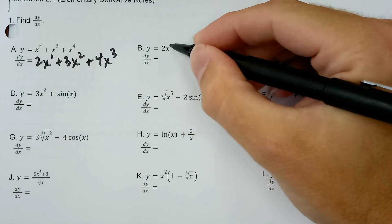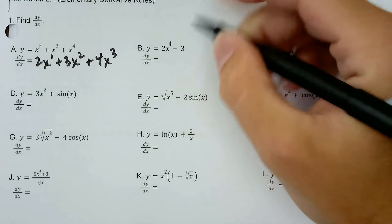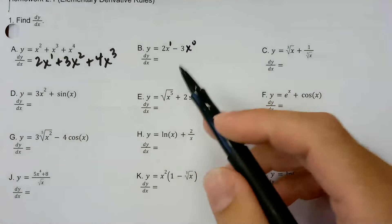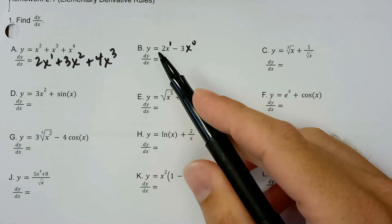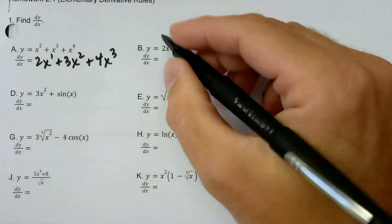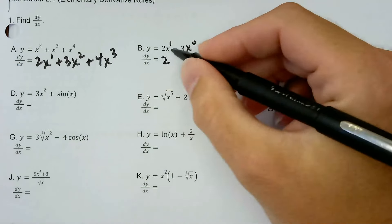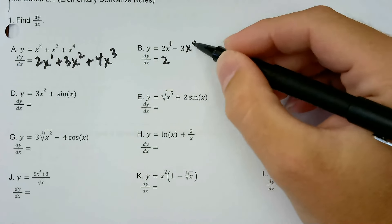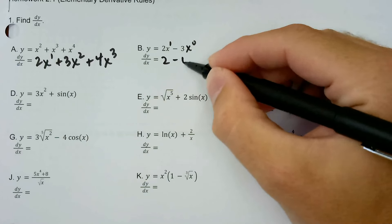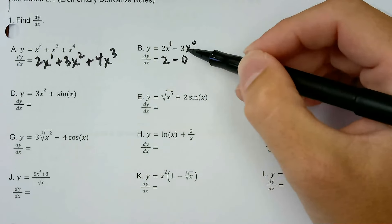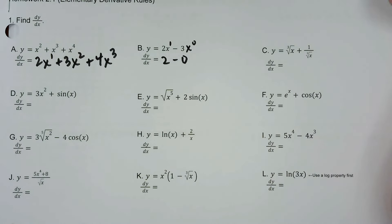2x is 2x to the first power, and 3 is 3 times x to the 0. If you just remember that the derivative of 2x is going to be 2 because it's a line with slope 2 — that's probably better, but it also fits with power rule. Same with 3x to the 0. Best is to say y equals 2x minus 3, that's a line with slope 2, so dy/dx should equal 2 everywhere.